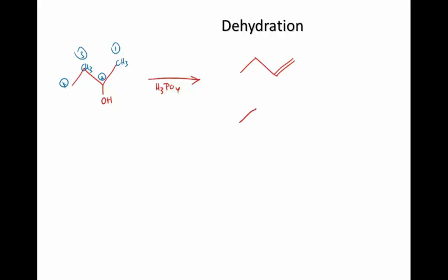But if the hydrogen comes off carbon number three, then the product will look like this, because the double bond will form between carbons two and three.